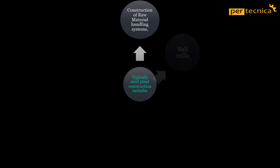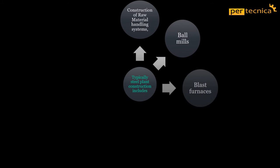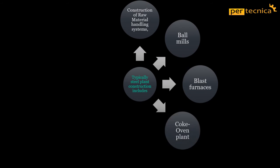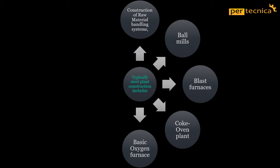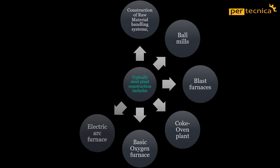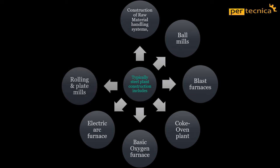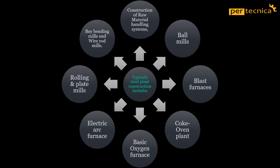Generally, steel plant construction includes construction of raw material handling systems, ball mills, blast furnaces, coke oven plant, basic oxygen furnace, electric arc furnace, rolling and plate mills, bar bending mills and wire rod mills.